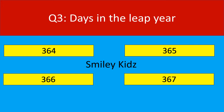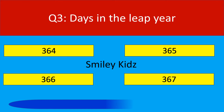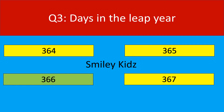Question number 3. Days in the leap year are. Your options are 364, 365, 366, 367. Your time is up. The correct answer is 366. Days in the leap year are 366 days.